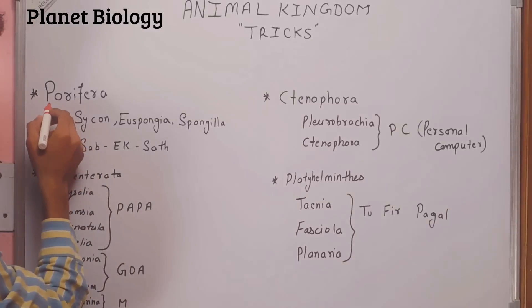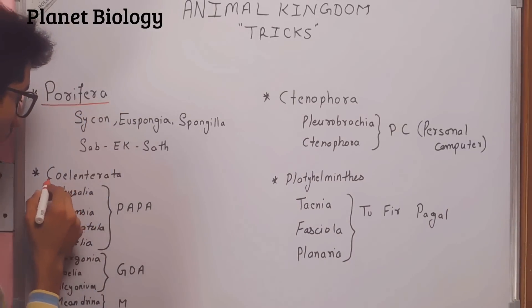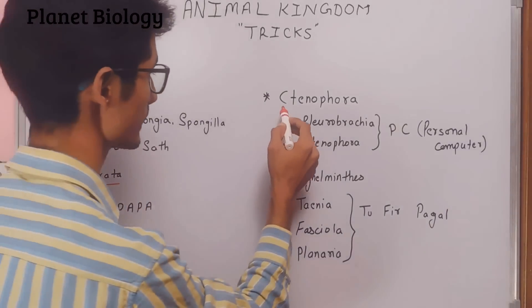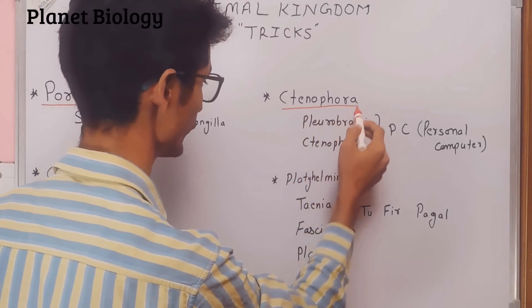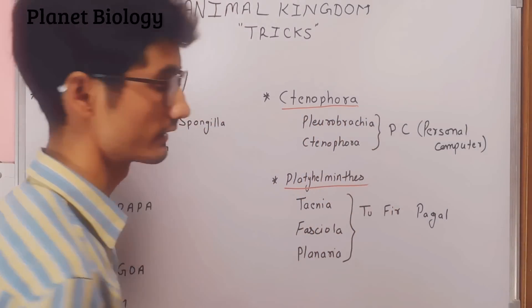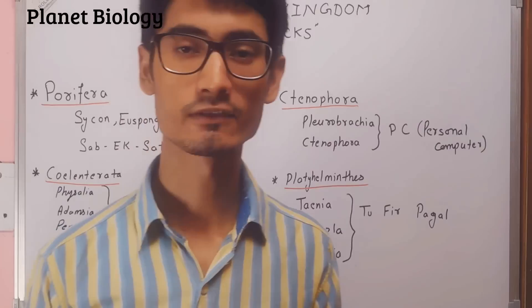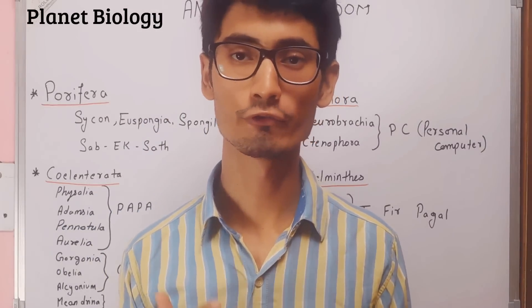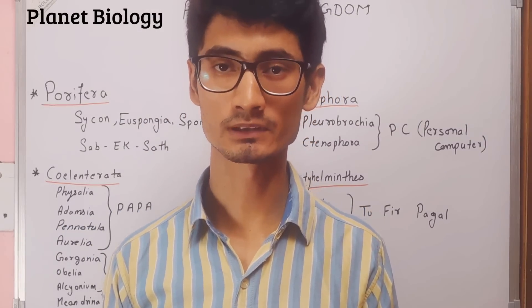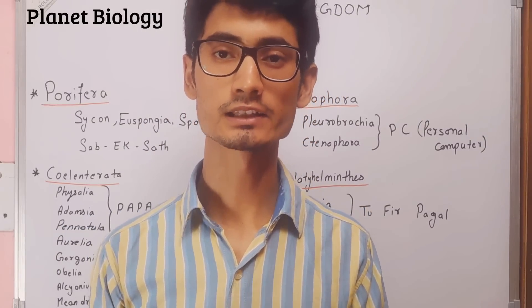First of all, the phyla are: Porifera, then Cnidaria, then Ctenophora, and the last one is Platyhelminthes. In this video, I will tell you four MCQs and how to do it.